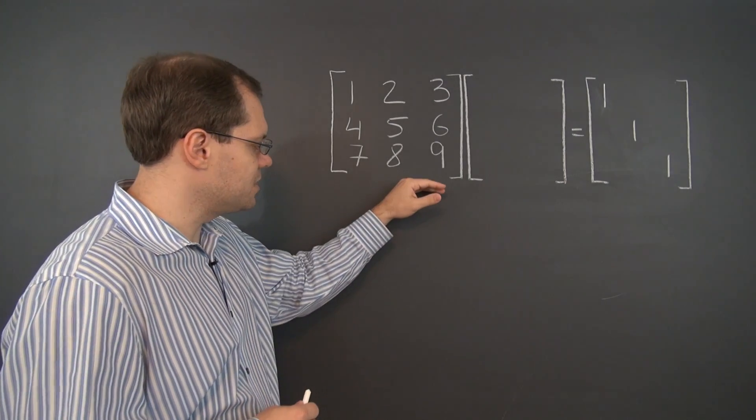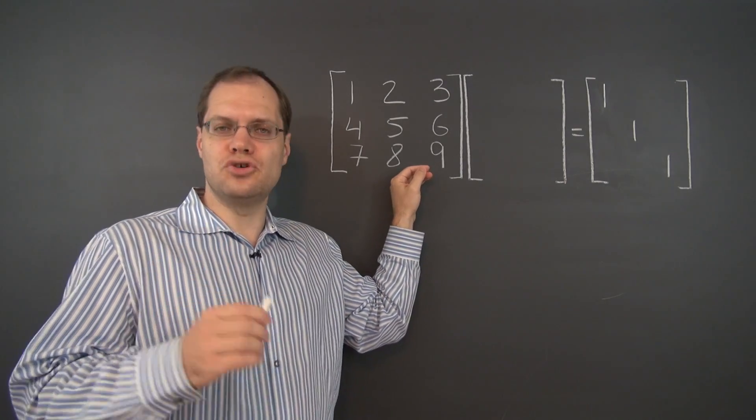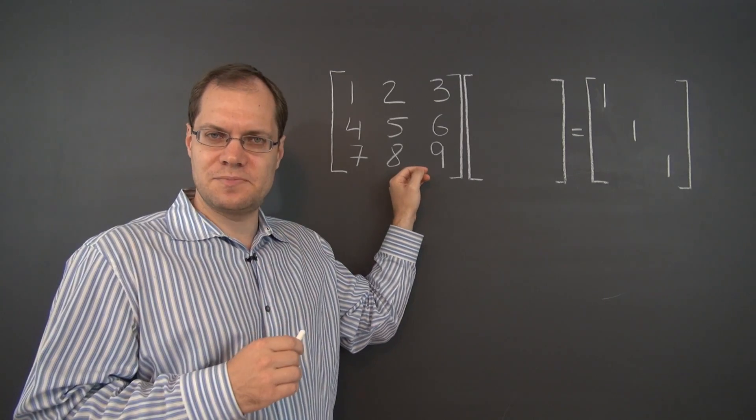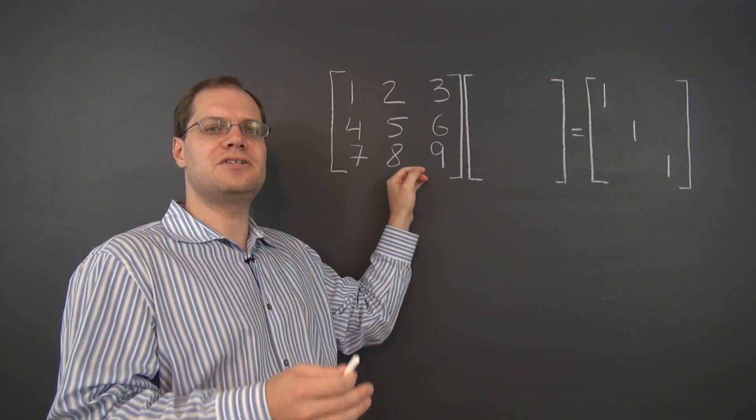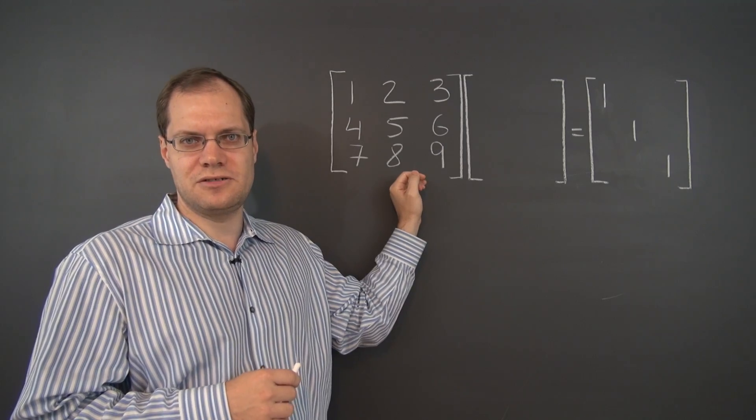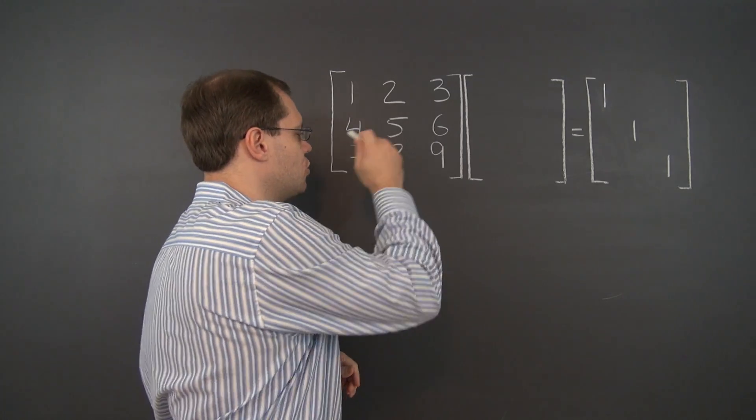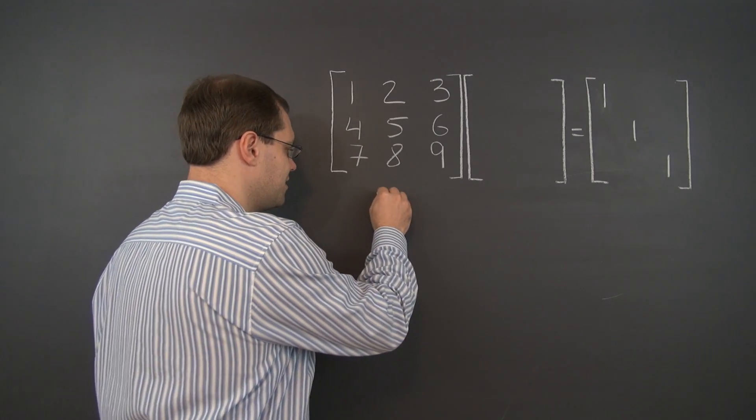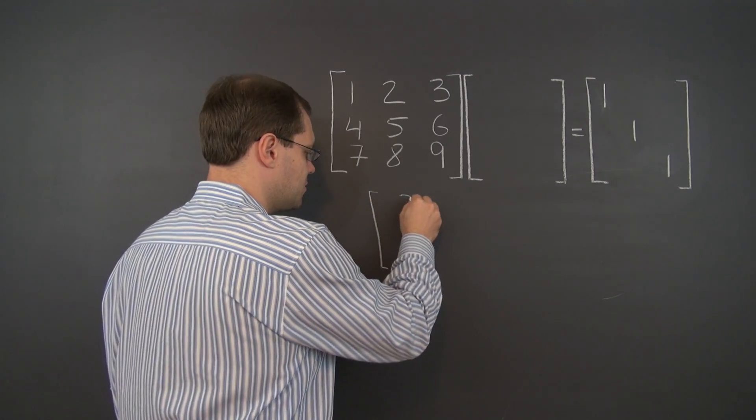And the column space of this matrix is two-dimensional. Now, we know that from the null space. If the null space is one-dimensional, then the column space is two-dimensional. But we actually also know the column space of this matrix, and it is given by this equation.